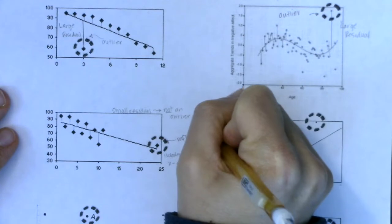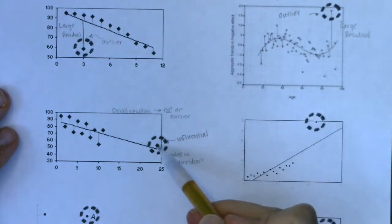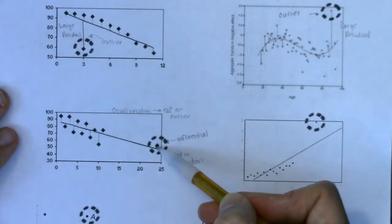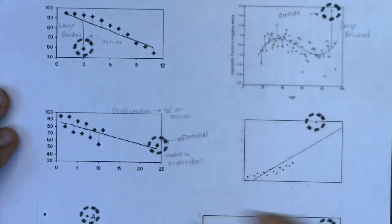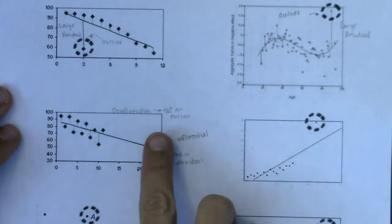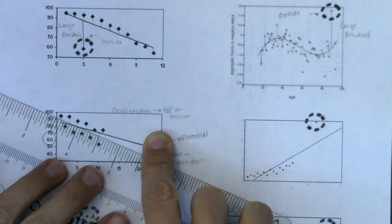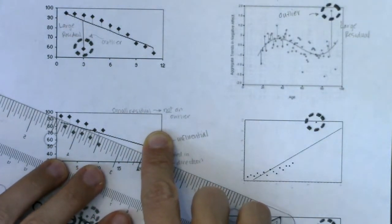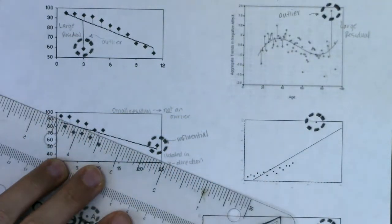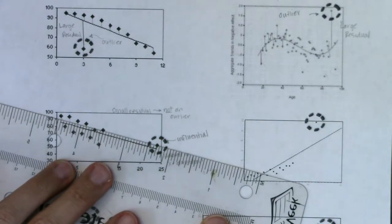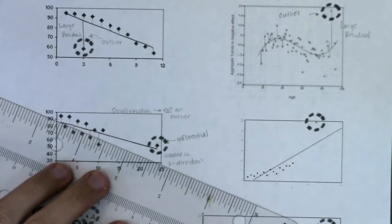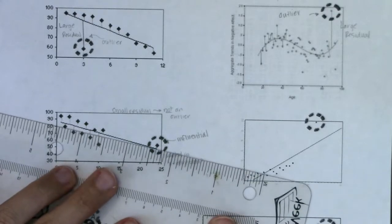What we mean when we say influential: because this point is all by itself, it is pulling the line towards it. There are no other points near it to counterbalance it. If this data point weren't here, the line would look different — something like a different slope. That point is influencing the line by pulling it towards itself, which changes the slope.